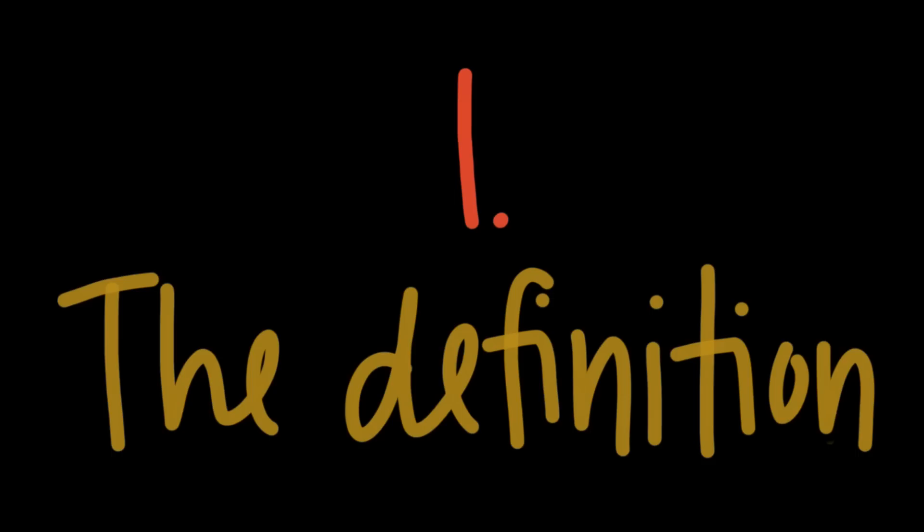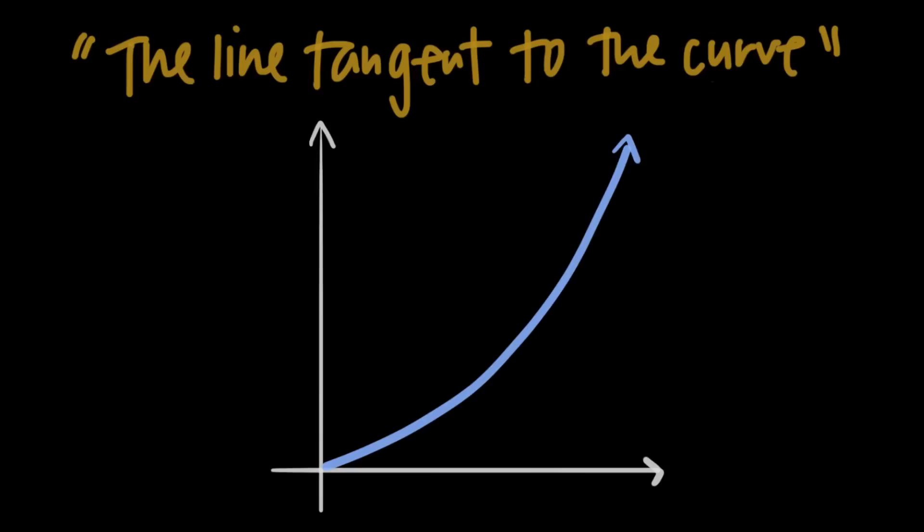So what actually is the tangent line? Well, it's a line that is tangent to a curve, meaning that it touches the curve at just a single point, and then continues in either direction with exactly the slope of the curve at that point.